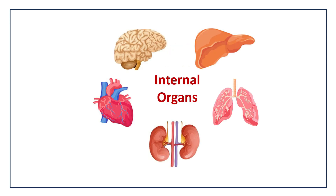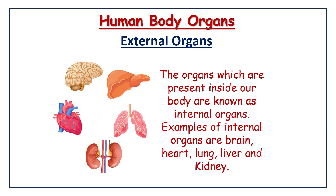Internal organs — these are some internal organs. The organs which are present inside our body are known as internal organs. Examples of internal organs are brain, heart, lungs, liver and kidney.